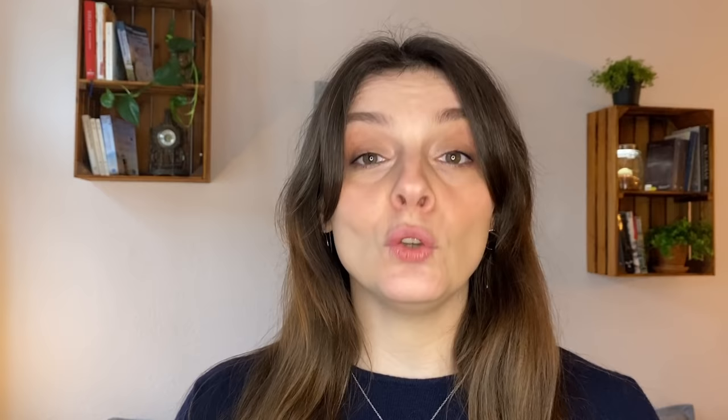In Quantencomputern sind Quanten die kleinste Informationseinheit und werden auch Quantenbits oder Qubits genannt. Quanten sind die kleinstmöglichen Teile einer physikalischen Größe. Ein Beispiel dafür sind Lichtquanten oder Photonen — die kleinsten Teile, aus denen Licht besteht. Wie kleine Energiepäckchen können sie in Atomen dafür sorgen, dass Elektronen Sprünge in neue Energieniveaus machen und Atome neue Bindungen eingehen.